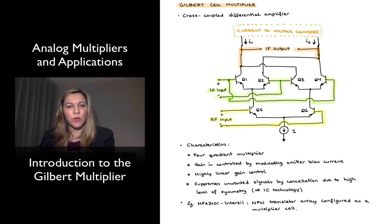Hello. In this video we are going to provide an introduction to the Gilbert Cell Multiplier, which is another kind of multiplier or another possible implementation of an analog multiplier. And it is very widely used.